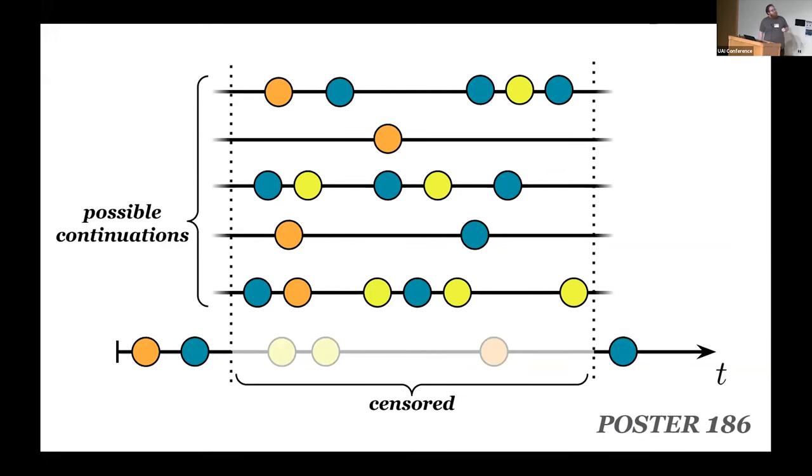These models naturally are autoregressive, and so handling missing information like this is particularly challenging, namely because of the fact that due to the continuous time nature, there's actually an infinite amount of different possible completions that could fill in the gap, so to speak, here, even if there's a finite amount of different event types that could occur.